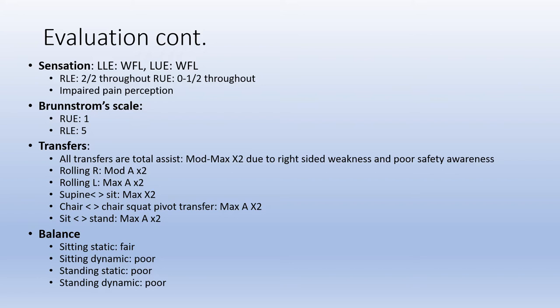For transfers, all transfers are total assists requiring 2 people — specifically mod-max assist of 2 — due to right-sided weakness and poor safety awareness. Rolling to the right was mod assist times 2; rolling to the left was max assist times 2. Supine to sit was max assist times 2, chair-to-chair squat transfer was max assist times 2, and sit to stand was max assist times 2. Sitting static balance is fair, sitting dynamic is poor, and all standing balance is poor.